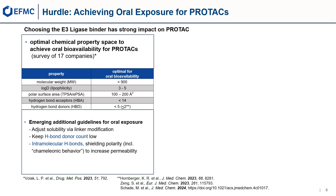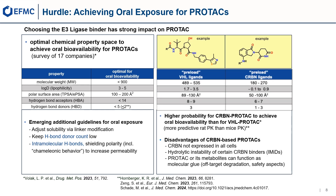Choosing a specific E3 ligase binder will have a strong impact on a PROTAC's oral bioavailability. VHL ligands are larger in size and more lipophilic than CEREBLON ligands, and three H-bond donors seem to be necessary. Thus there is a higher probability for CEREBLON-based PROTACs to achieve oral bioavailability by linking more lipophilic protein of interest binders with small, slightly polar CEREBLON ligands having one or two H-bond donors. This is reflected in the high number of oral CEREBLON-based PROTACs in clinical trials, though oral VHL-based PROTACs have also been reported.